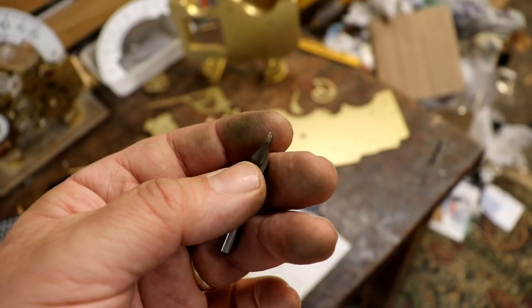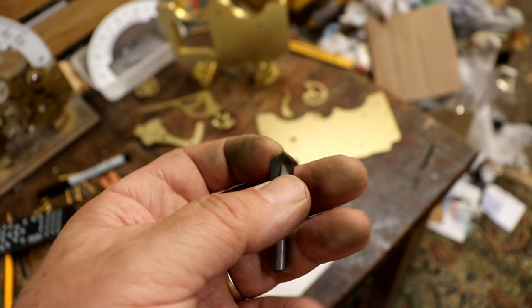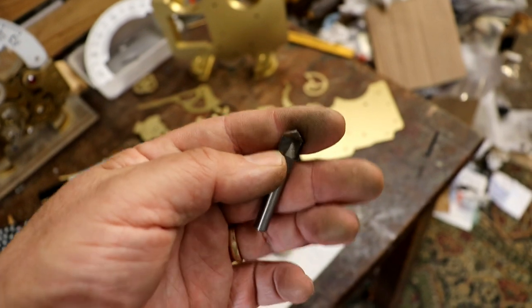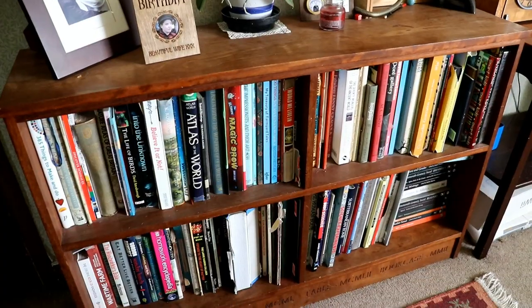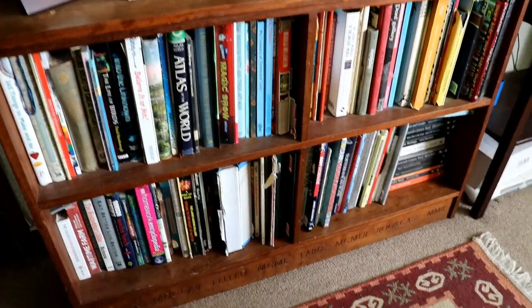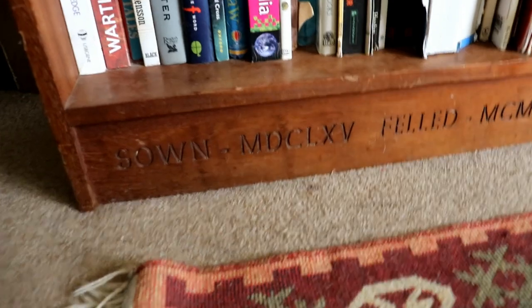The other nice thing you can do with a router, if you're using it freehand and you've got some sort of cutter like that, is you can cut lettering, text onto things, wooden things. Like, for example, this bookcase that I made from old recycled science tables a long time ago.